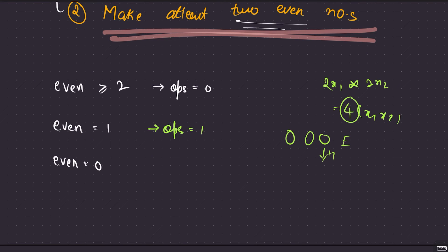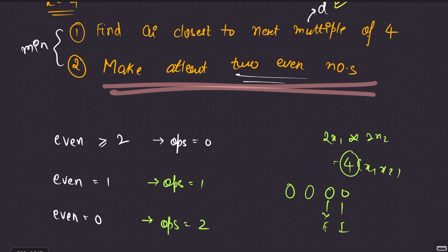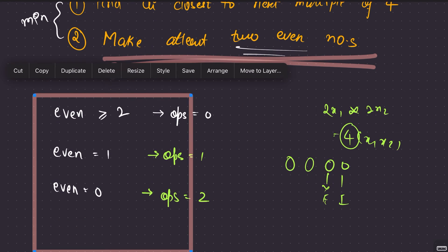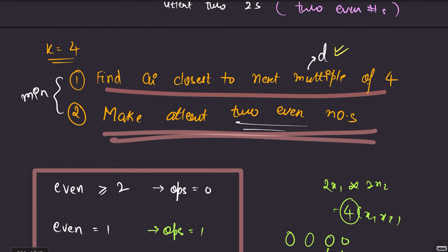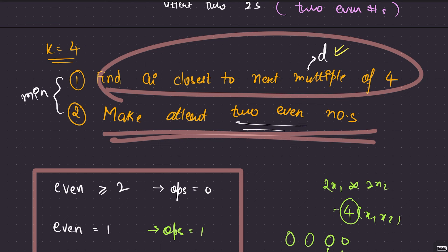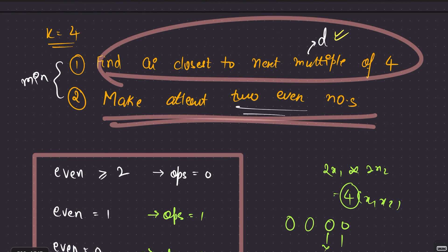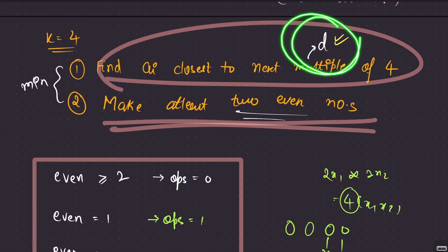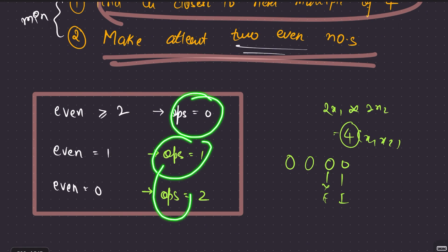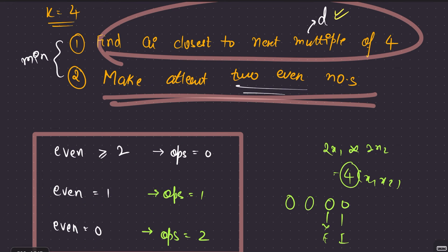When you have zero even numbers, you need to convert two odd numbers to even numbers by adding 1 to each, consuming 2 operations. The overall answer for k=4 is minimum of D and the operations from the even-number approach. That covers all cases for making the product a multiple of 4.